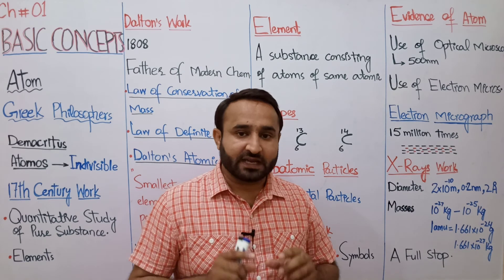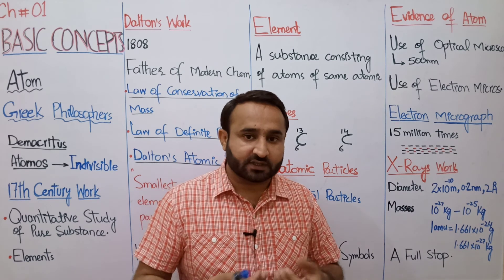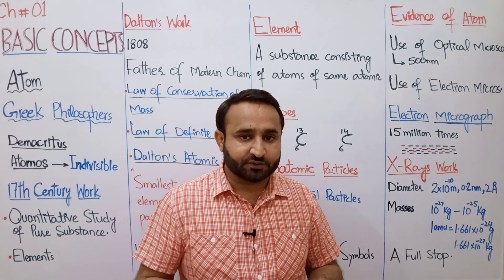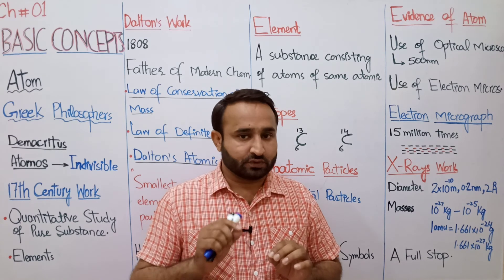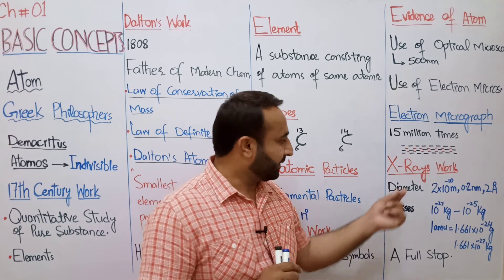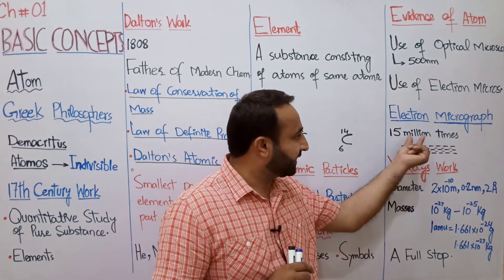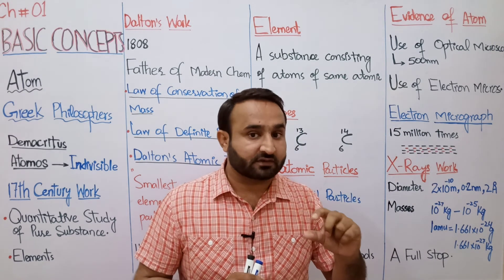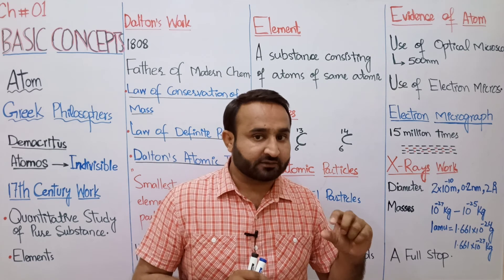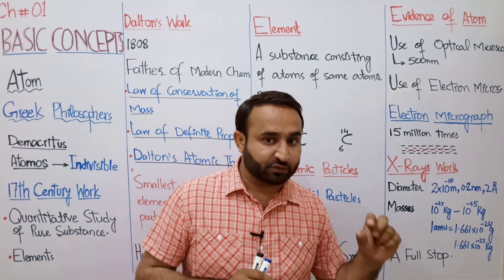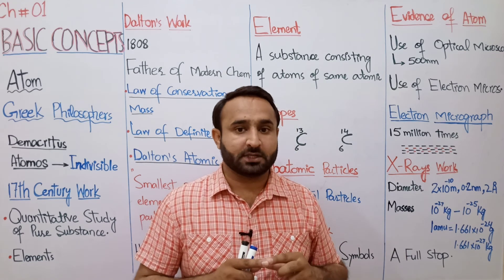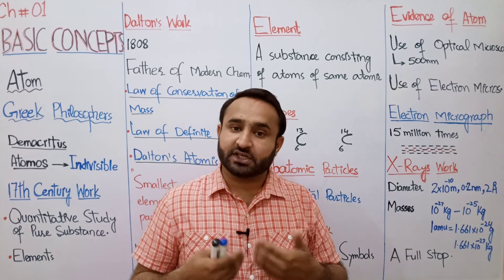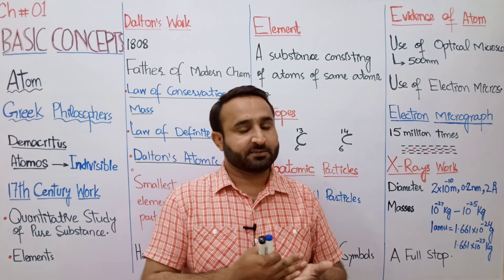Atom کے evidence کے لیے X-rays کا بھی استعمال ہوتا ہے۔ X-rays وہ radiations ہیں جن کی penetration power بہت زیادہ ہوتی ہے اور جو ہمیں atom کو دیکھنے میں مدد کرتی ہیں۔ Electron microscope میں beam of electrons استعمال ہوتی ہے کسی object کو دیکھنے کے لیے۔ Electron کی dual nature ہوتی ہے — یہ particle بھی ہے اور wave بھی۔